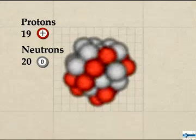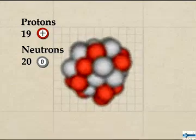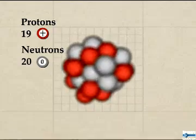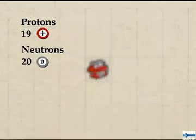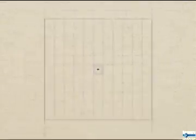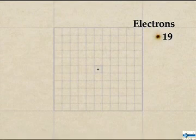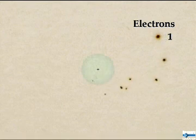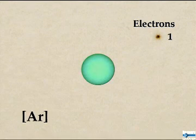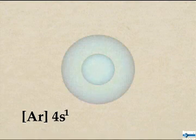Potassium has 19 negatively charged electrons to balance its 19 protons. These electrons are found in four orbital shells surrounding the nucleus, which can be visualized as being built up from the nearest preceding noble gas, argon. Argon has 18 electrons distributed among three orbital shells. The additional electron in potassium is found in the spherical 4s orbital shell.